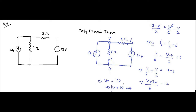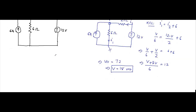So the node voltage is 18 volts. Now we determine currents I1 and I2. I1 = V/6 = 18/6 = 3 ampere.